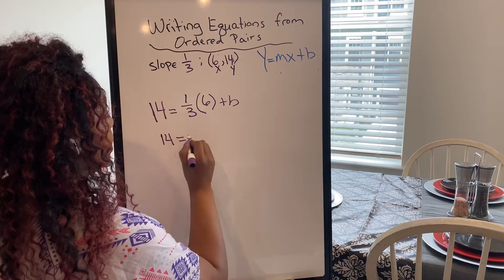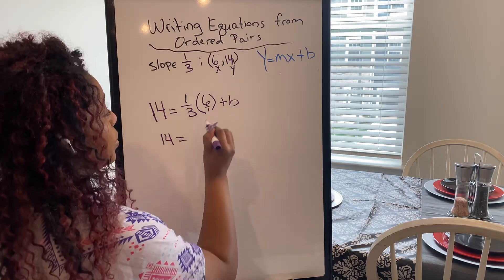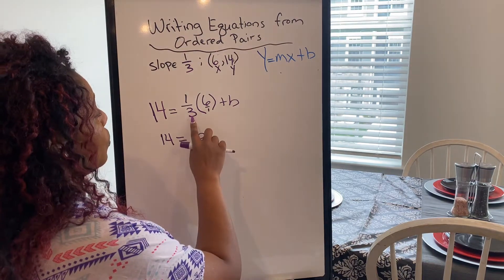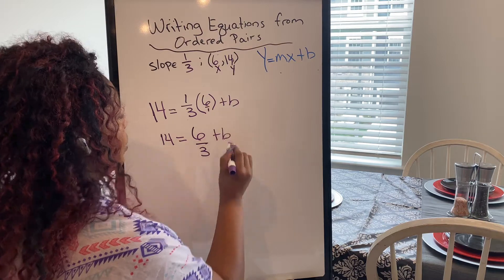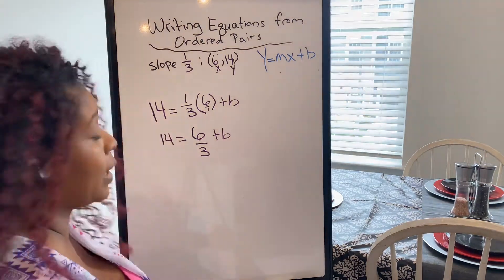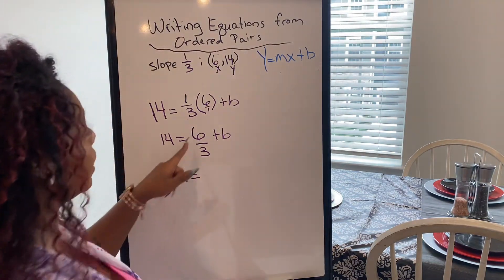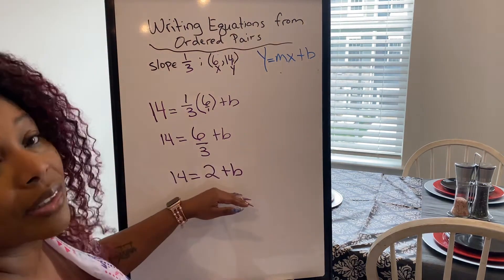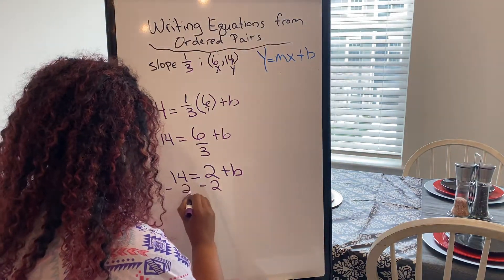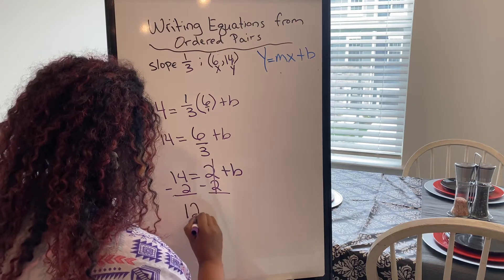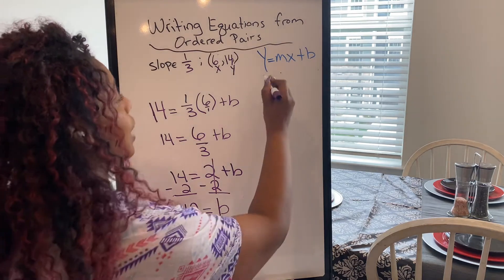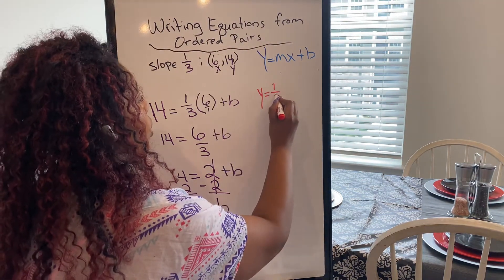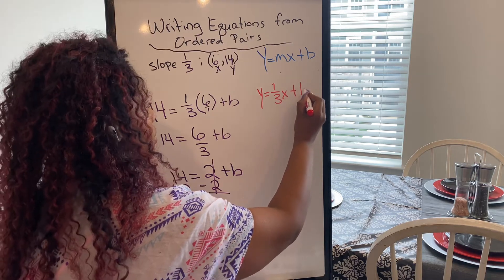I'm going to bring down what I don't use the first time. Before I do anything else, I can look and say I can simplify this. What is six divided by three? Six divided by three is two. Now I have a simple one-step equation. I'm going to do my inverse by subtracting two from both sides and I'm going to get 12 equals b. So now I can come back up here and write my equation: y equals one third x plus 12.